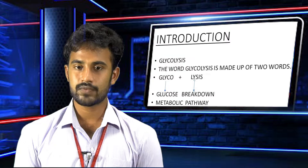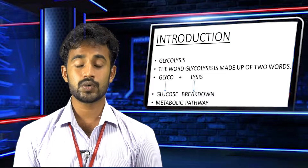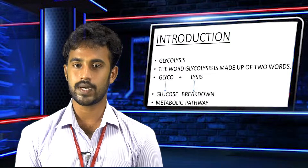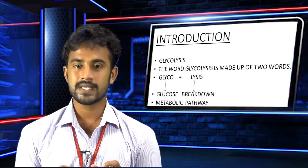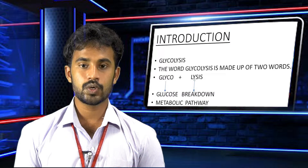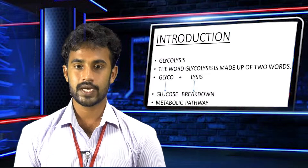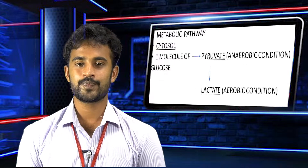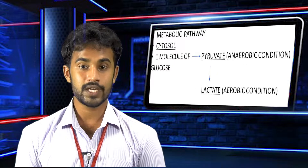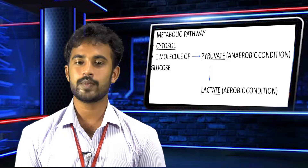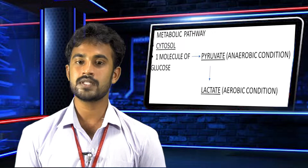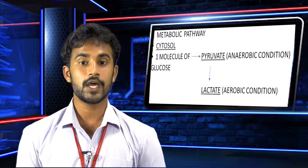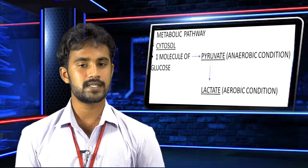Now, introduction to the pathway. So what is glycolysis? The word glycolysis is a combination of two words: gluco plus lysis. Gluco means glucose and lysis means breakdown. It is a metabolic pathway which takes place in the cytosol, where one molecule of glucose is broken down into pyruvate in anaerobic condition, which means in the absence of oxygen. Further, pyruvate is broken down into lactate in aerobic condition, which means in the presence of oxygen.